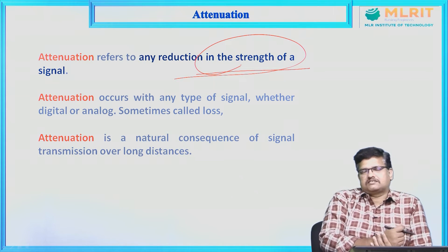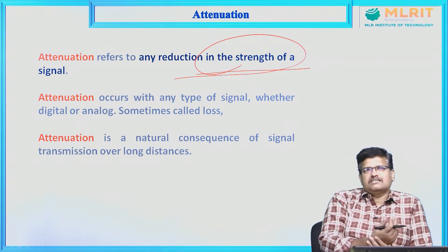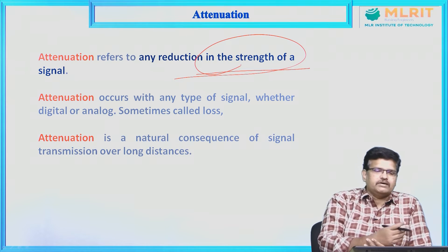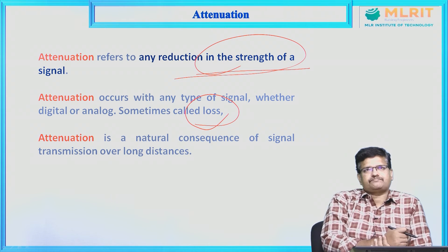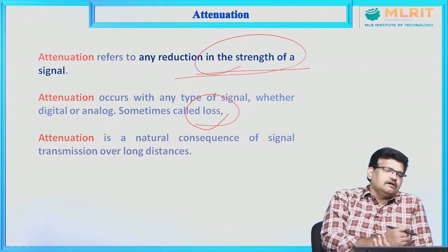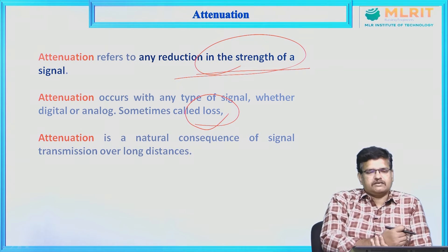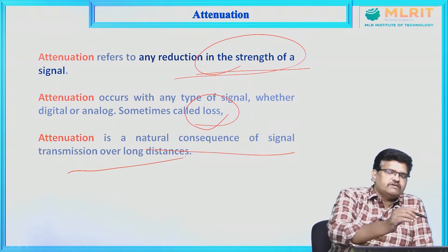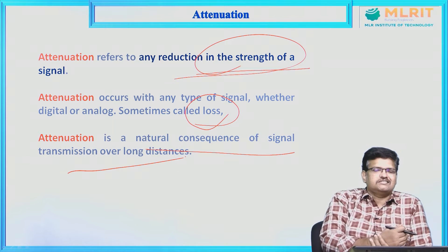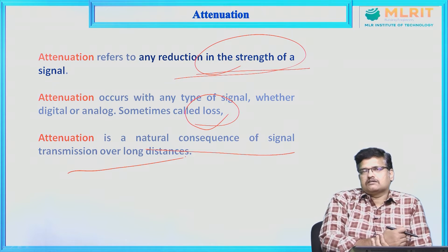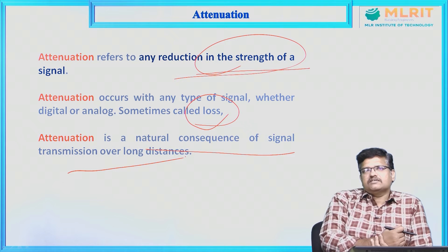Attenuation may occur whether the signal is analog or digital — whatever form it may be, we can call it a loss. Once attenuation is introduced in our signal, we may experience some loss. Attenuation refers to any reduction in the strength of the signal and is caused due to the natural consequence of signal transmission over longer distances.